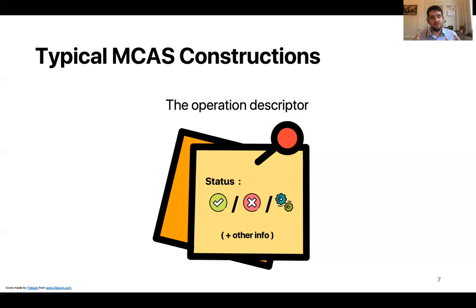Existing implementations all revolve around what we can call an operation descriptor. So this is a structure that resides in memory and the structure contains all of the information required to complete a given MCAS operation either by the initiating thread or by a potential helping thread. So this descriptor will contain, of course, all of the addresses and new and expected values. And it can additionally contain implementation dependent data. Most implementations have a status field. So the status field indicates whether the operation has completed and if so, whether it was successful or whether it has failed, or if the operation is still ongoing.